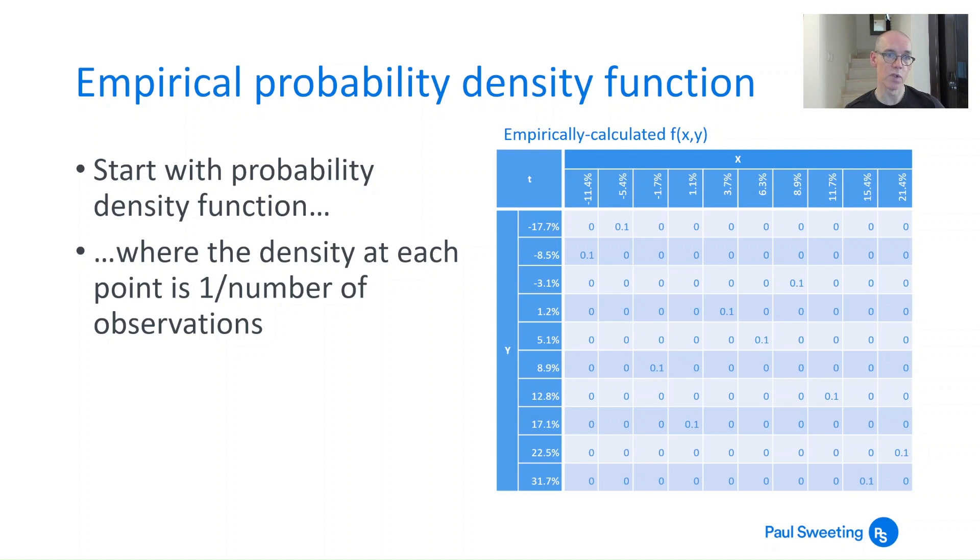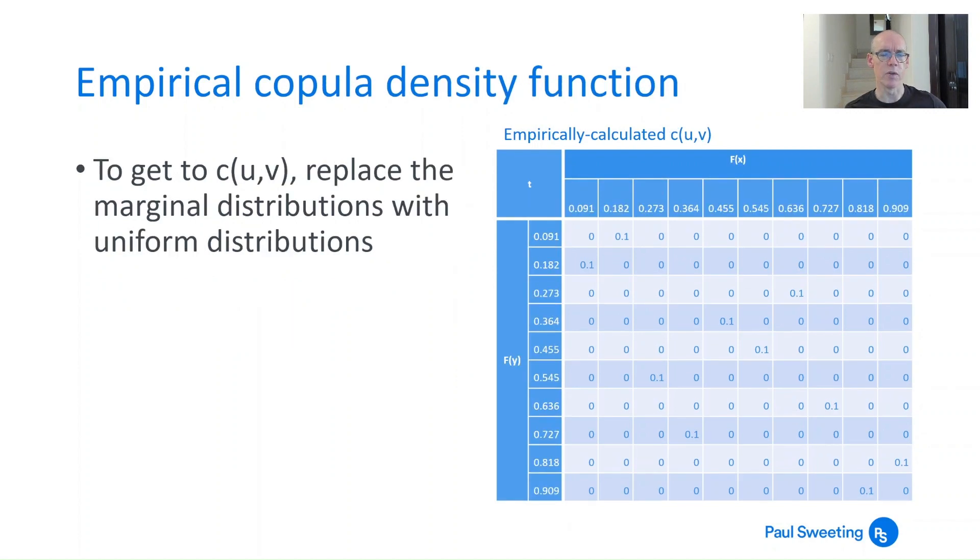That is the observed probability for those return combinations, and you can see that very roughly you've got a kind of ellipsoid shape running from the top left to the bottom right of that table, showing the approximate positive correlation you've got between those observations. Now if you then simply substitute those return values with f of x that we calculated before, then what you've essentially got there is an empirically calculated copula density function, which is quite nice because what that means is that if you work out what the value of a particular copula density function is for each of these cells, you can look at what the actual versus the expected is.